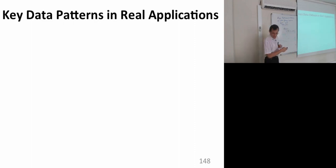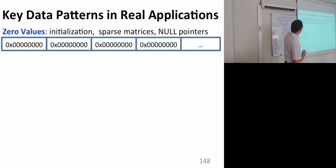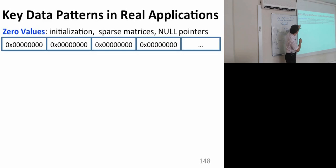What's the key idea? Let's take a look at some data patterns in real applications. Some cache blocks are all zeros. This is a cache block with eight 8-byte values in a 64-byte cache line. Zero values are common because of initialization — you initialize things to zero, you have sparse matrices, null pointers — they're all zeros.